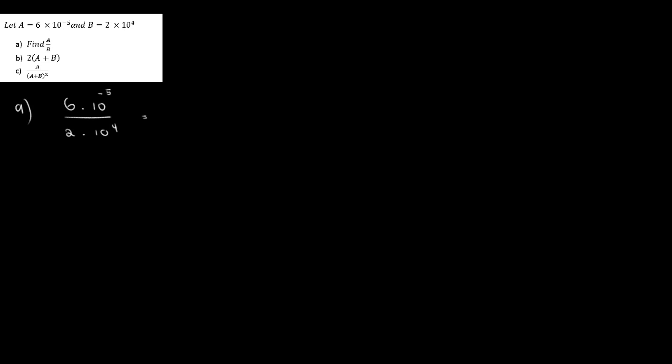Now we can simplify this. We can divide 2 with 6, that gives me 3 as the numerator. And I'm going to take this from top to bottom, so this gives me 10 to the power of 4 multiplied 10 to the power of 5. So I have 3 over 10 to the power of 9. And if we want to write this without scientific notation, that's going to give me 1, 2, 3, 4, 5, 6, 7, 8, 9.